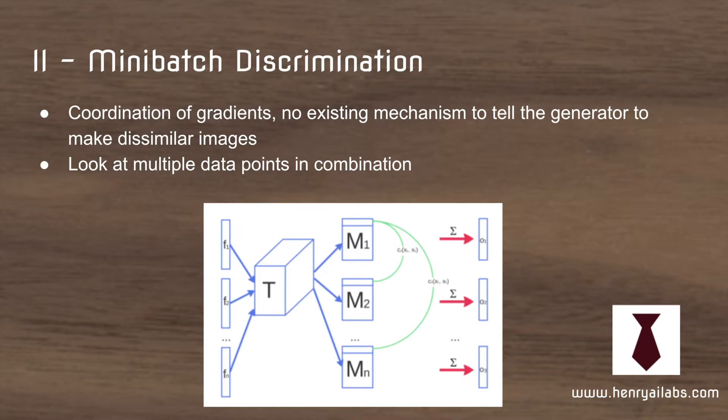The second idea is mini-batch discrimination. The high-level idea is that as the GAN formulation currently is, there's no real thing that would force the generator to produce diverse outputs. When it does something like mode collapse, which is the most frequently occurring failure mode, there's no real reason that this is a terrible thing for the generator to do.